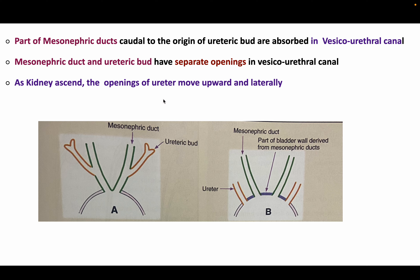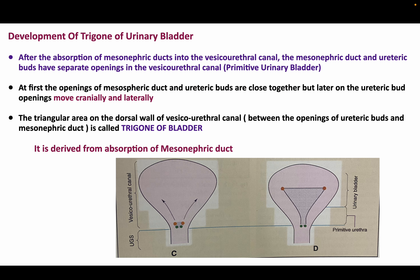As the kidney ascends, the openings of the ureters move upward and laterally. After absorption of the mesonephric duct, the mesonephric duct and ureteric bud openings are at first close together, but later the ureteric bud openings move cranially and laterally with kidney ascent. The triangular area on the dorsal wall of the vesicourethral canal between the ureteric bud and mesonephric duct openings is called the trigone of the bladder, derived from absorption of the mesonephric duct.